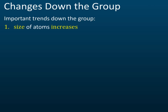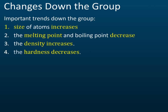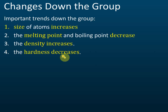The important trends down the group are: the size of atoms increases due to the increase in the number of electron shells; melting point and boiling point decrease; density increases; and hardness decreases. You need to know the explanations for the first three trends, but not for hardness.